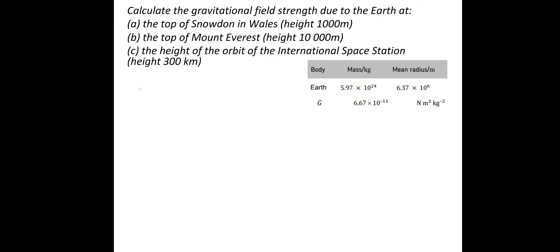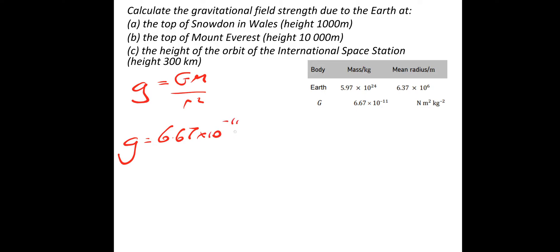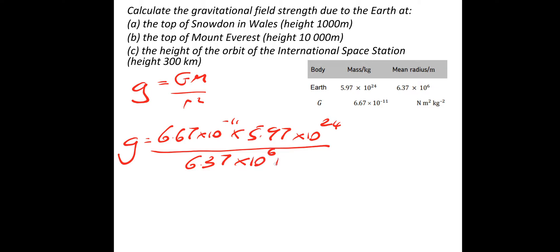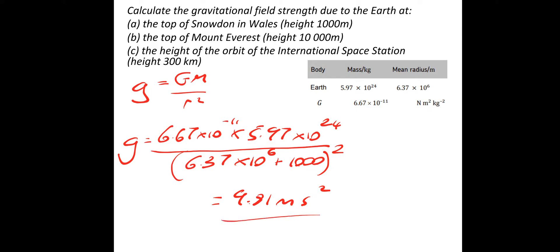I'm just going to work through these. We're going to use g equals GM over r squared, then simply put the numbers in. So we've got 6.67×10⁻¹¹ times the mass 5.97×10²⁴, divided by the distance from the centre of the Earth: 6.37×10⁶ plus 1,000 metres — remember to square that. And that gives us 9.81 metres per second squared.